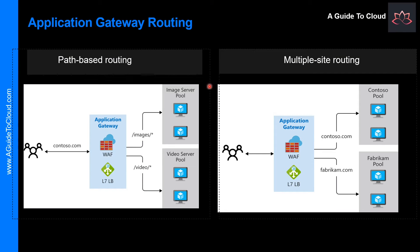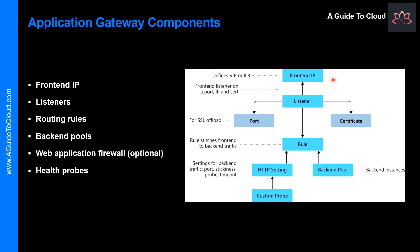Some of the additional features of Application Gateway routing include Redirection, Rewriting HTTP headers, and Custom Error Pages. Application Gateway has a series of components that combine to route requests to a pool of web servers and to check the health of these web servers.